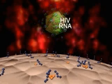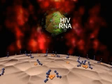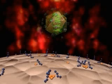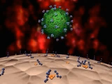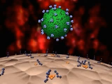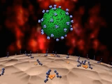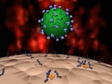HIV is composed of a viral core containing two identical strands of RNA associated with the enzyme reverse transcriptase and other core proteins. Surrounding the core is a viral membrane containing multiple viral glycoprotein complexes, often called spikes.